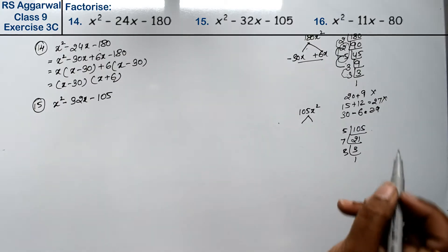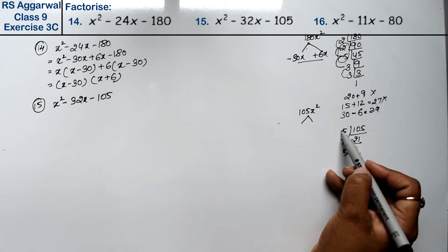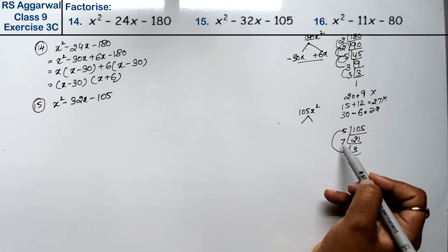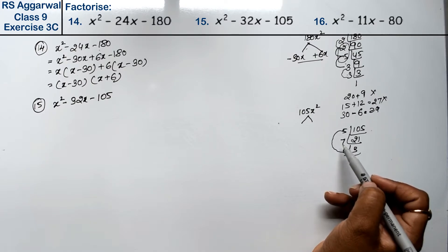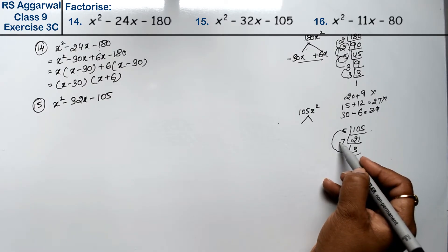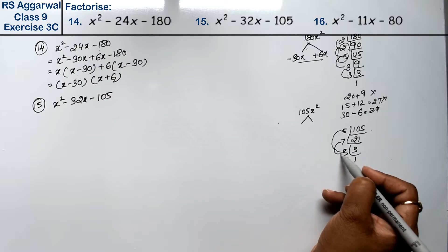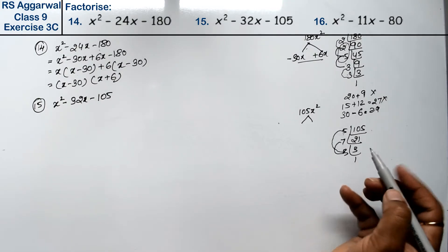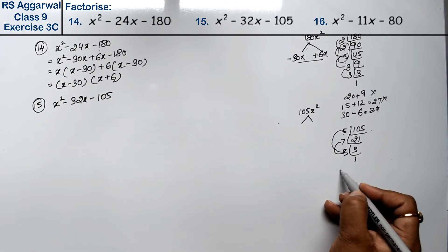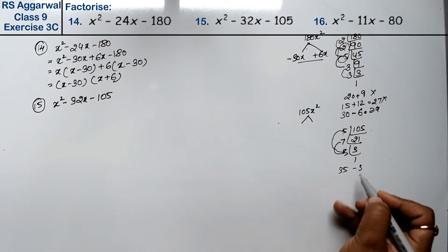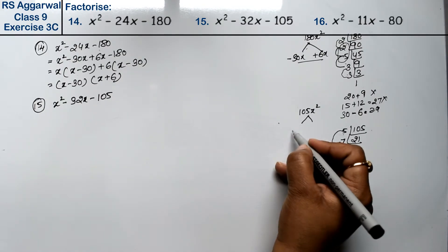We have to make 32. So how do we take it? 5 threes are 15 and 7 — 15 and 7 is 22, so this cannot be. 7 threes are 21 and 5, that cannot be either. Now, 7 fives are 35 and 3.